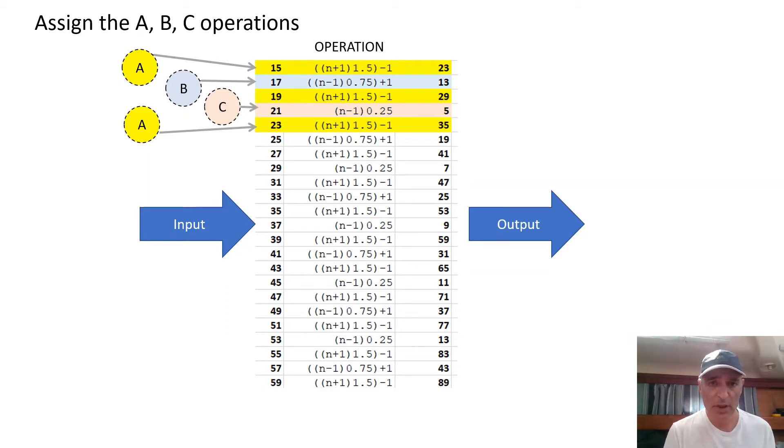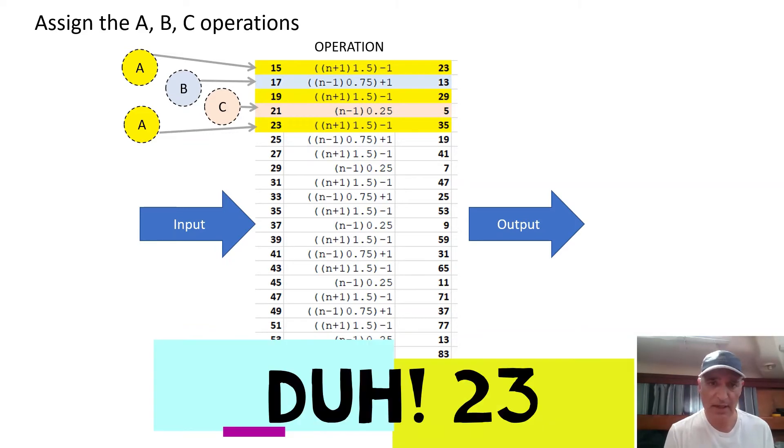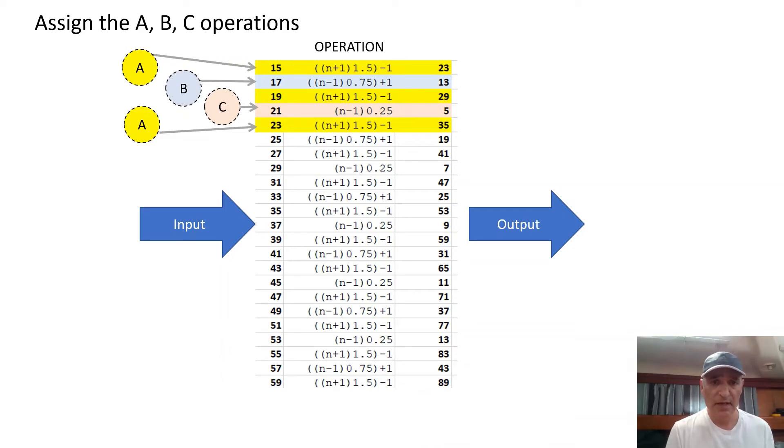So I gave you the first operation, which turns 15 into 29. And let's just speak through that. So that's 15 plus one is 16 times 1.5 is 24 minus one is 23. And the second operation B is n minus one times 0.75 plus one. So that's 17 becomes 16 becomes 12 becomes 13. And the third operation is simply n minus one times 0.25. And that's simply, let's give an example, 21, 20 divided by four equals five.